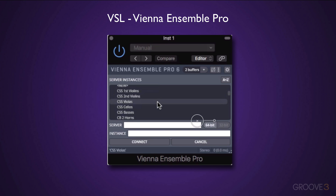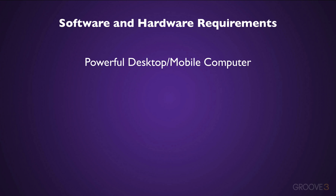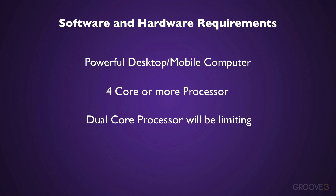So let's jump in and see what it's all about. First, let's go over the software and hardware you'll need for this course. The most important will be a powerful desktop or mobile workstation. I'd recommend a quad-core processor, maybe three gigahertz and up, which will really work well in speed and performance. You can use a dual-core slower processor, but you will be limited on the amounts of tracks and voicings with the instruments.